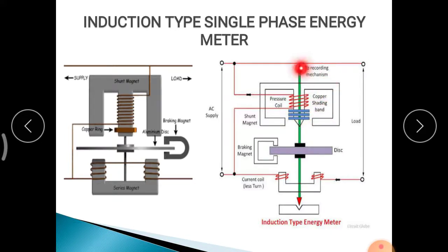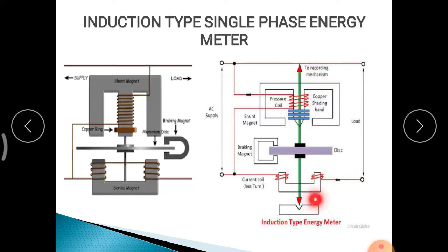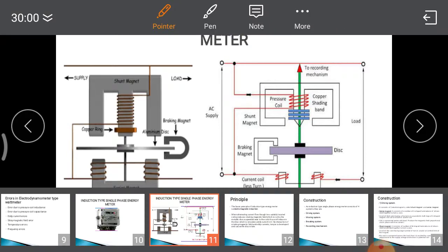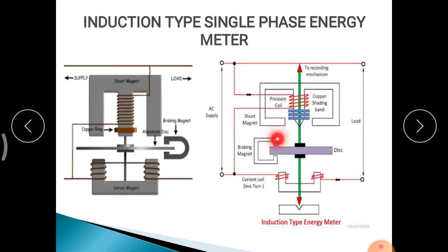The moving system consists of a thin aluminium disc mounted on a vertical spindle or shaft. It is placed in the gap between the series and the shunt magnet. The number of revolutions the disc makes depends on the energy consumed by the load.